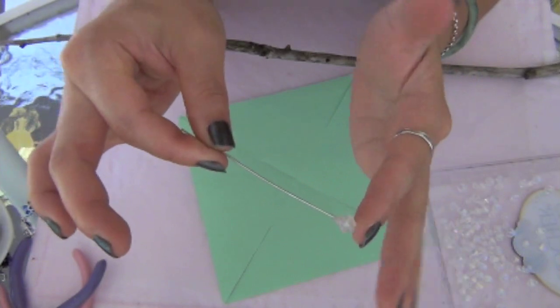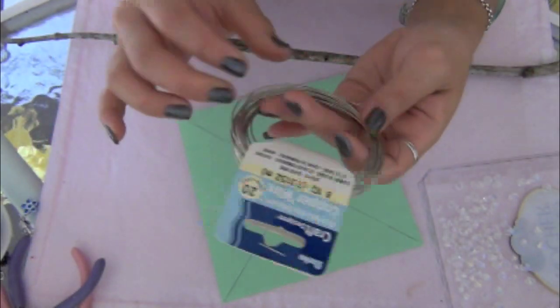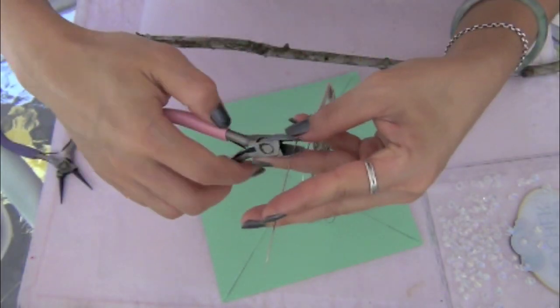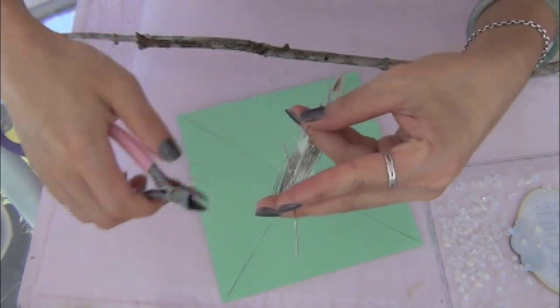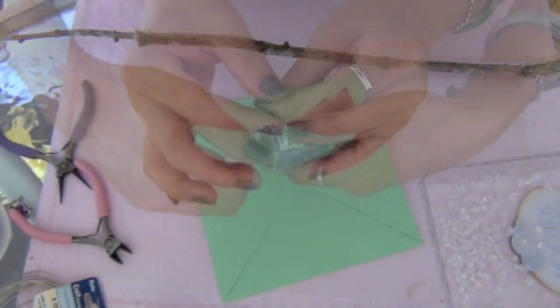Once you have the four corners cut, now we need to learn how to make this pin. You can use any type of wire. I just happen to have this jewelry-making wire on hand.